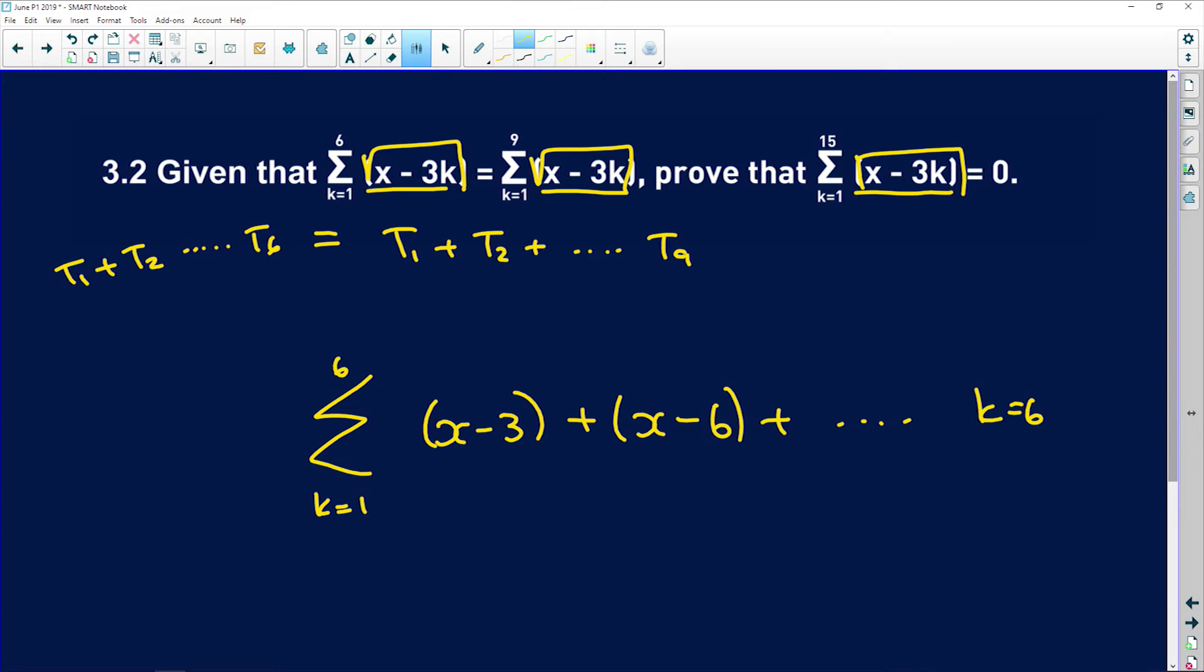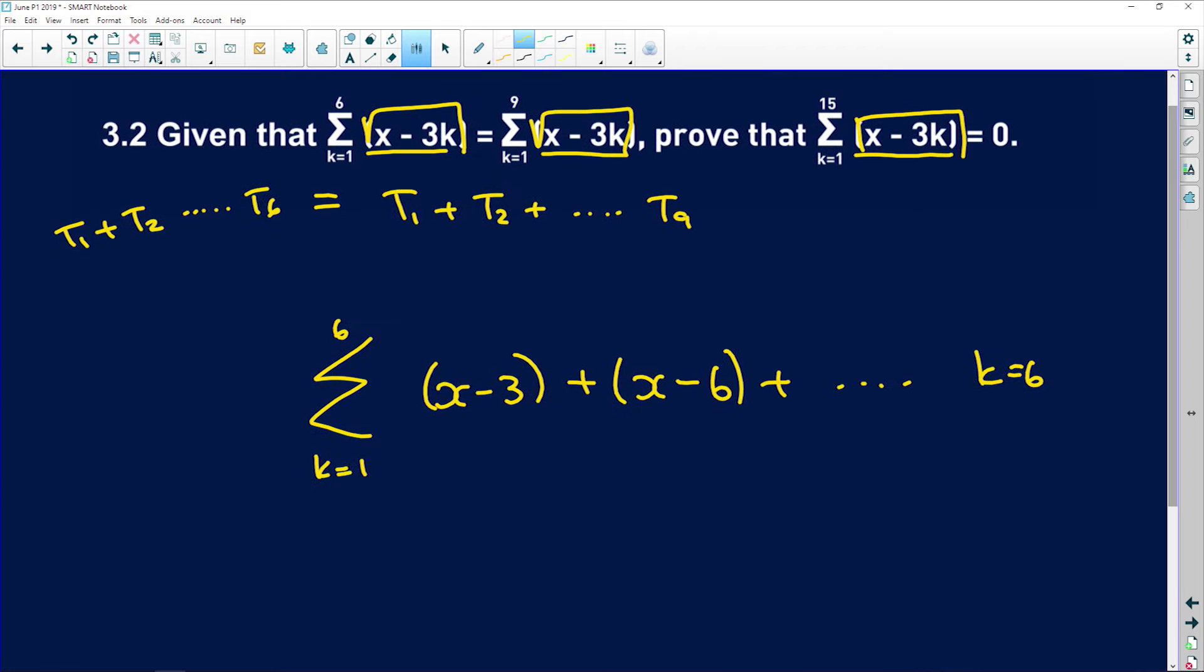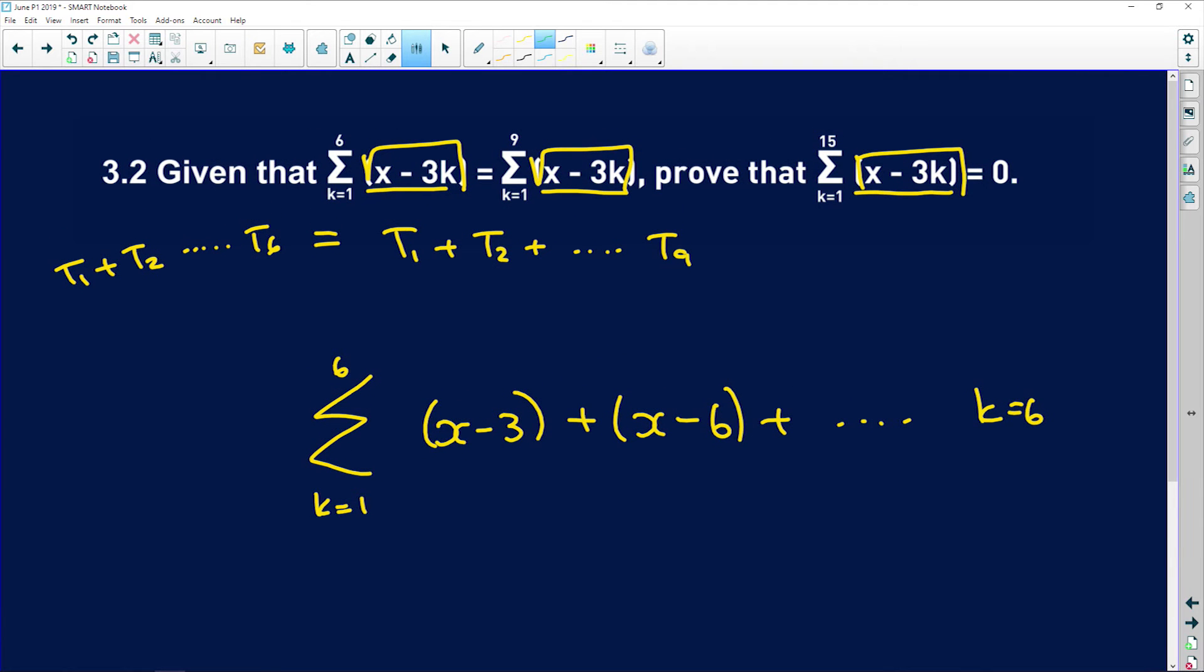So this, immediately from what you could see, you know that it's arithmetic because there's no n squared and there's no r, there's just this with a common first difference.